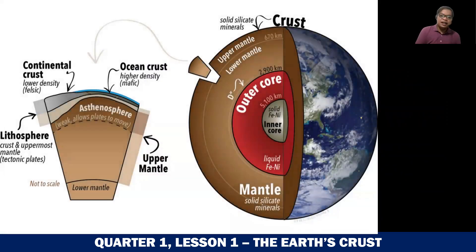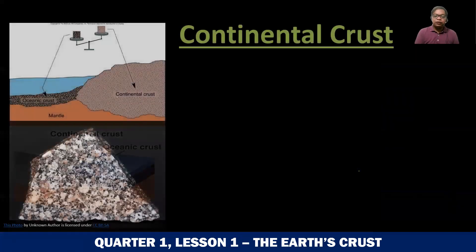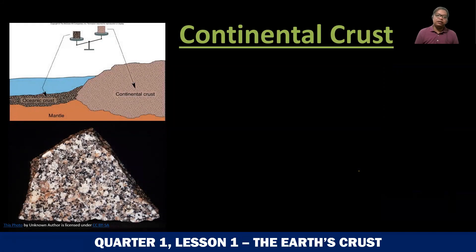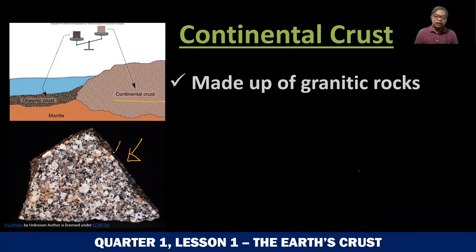Now, the crust actually has two types. We have the continental crust and the oceanic crust. So let us talk about the two types of crust. The first type is the continental crust. It is made up of granitic rocks or granite. Here is an example of a granite. As you can see, a granitic rock or a granite has a lot of crystalline formations — there are a lot of crystals on its surface and the outside.